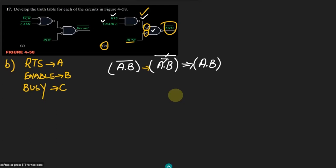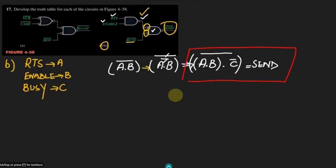This AB is one input to the next NAND gate, while BG, which is C, becomes C complement as the other input. Both AB and C' are applied to the NAND gate, so the output 'send' is (AB · C'), whole complement. This is the Boolean expression of the output we get from this circuit.